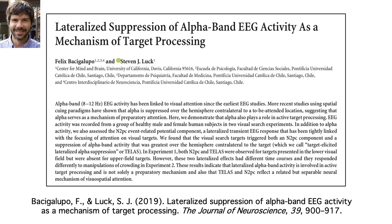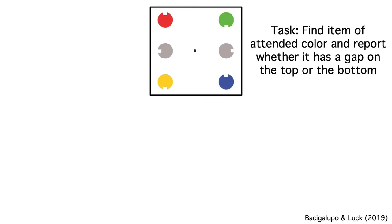Felix took this general idea and put it into the context of an N2PC paradigm so that he could look at lateralization of the stimulus-elicited alpha suppression. At the beginning of each five-minute trial block, subjects were told to attend to a particular target color, like red. Each display contained several colored objects, and the locations of the different colors varied randomly from trial to trial. On each trial, subjects were asked to locate the target and press a button to indicate whether it had a gap on the top or the bottom.